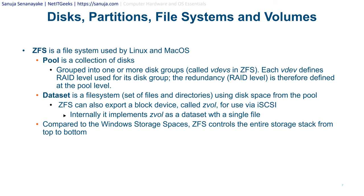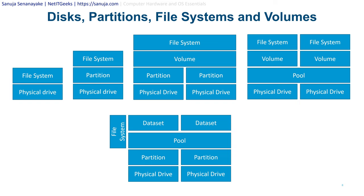Here is a visualization diagram of what I've discussed. On the far left, we have a file system placed directly on top of the physical drive — this is what most USB drives and SD cards use. This is the simplest form of disk, partition, file system, and volume creation. For example, an SD card in a camera will have a physical drive with a file system directly on top.